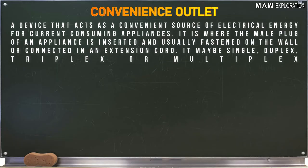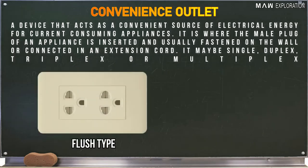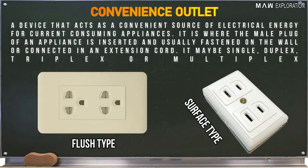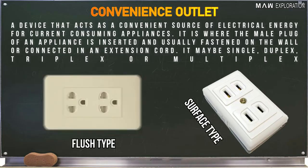Here are the most commonly used electrical materials. Convenience outlet is a device that acts as a convenient source of electrical energy for current-consuming appliances. It is where the male plug of an appliance is inserted and is usually fastened on the wall or connected in an extension cord. It may be single, duplex, triplex, or multiplex, and could be surface type or flush type.